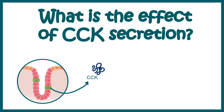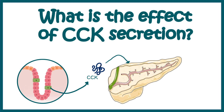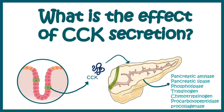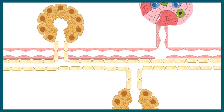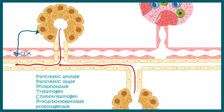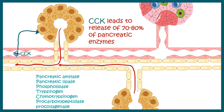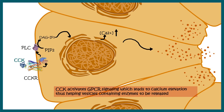Once CCK is secreted, it majorly acts on pancreatic acinar cells, leading to secretion of the majority of pancreatic enzymes such as pancreatic amylase, lipase, trypsinogen, and chymotrypsinogen. CCK travels through the bloodstream and acts on both acinar cells and duct cells. In fact, 60 to 70% of the release of these digestive enzymes is modulated by CCK alone, giving it a huge role in pancreatic enzyme secretion.